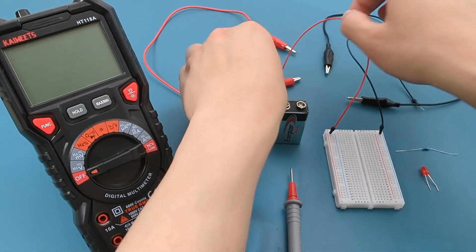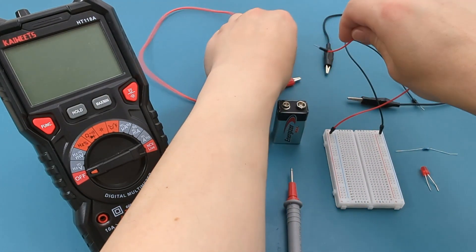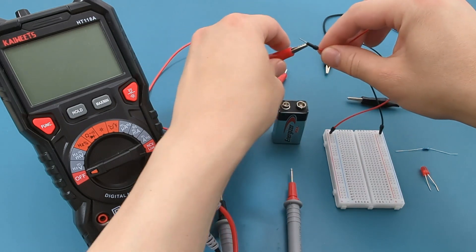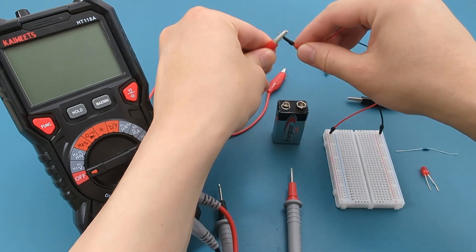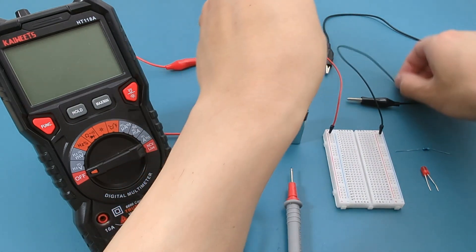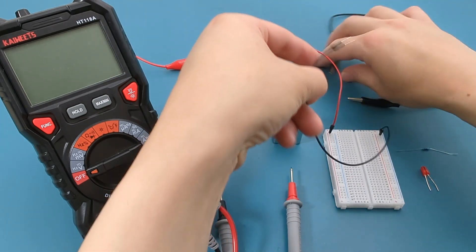Connect the red alligator clip to the red jumper wire. Connect the black alligator clip to the black jumper wire.